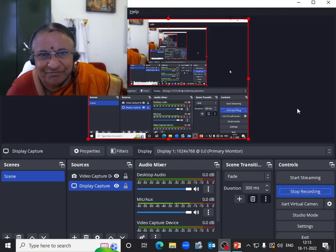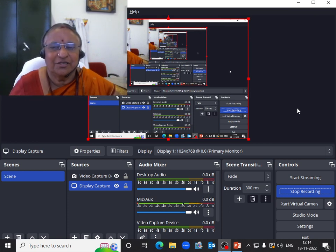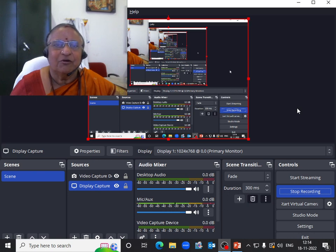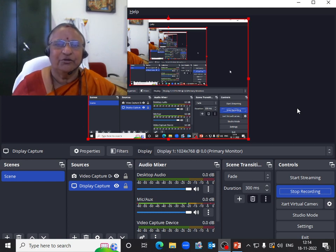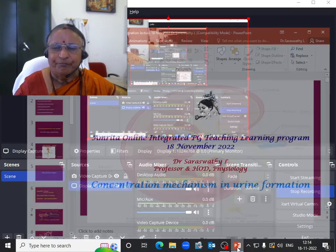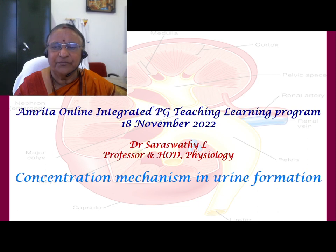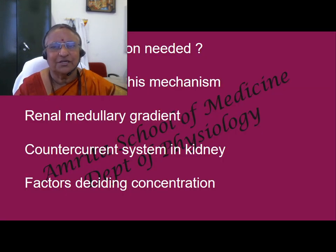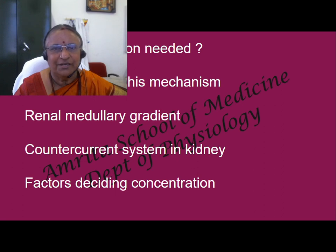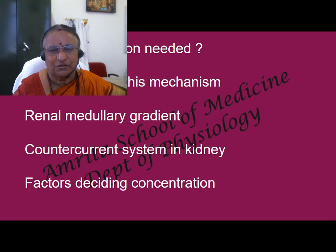Good evening to all the PG residents. First of all, let me thank Dr. Girish Kumar sir, our principal, and the organizers of this PG program. I am sure these recordings will be of use to all the student community. The topic I am going to talk about today is concentration mechanism in urine formation. I will be discussing under the following headings: why you need a concentration mechanism, what are the components of this mechanism, the concept of renal medullary gradient, then all about the counter current system in the kidney — a very important topic both from examination point of view for both UG and PG and also from a practicing side — and lastly the factors which decide concentration of urine.